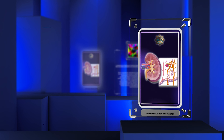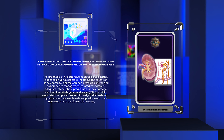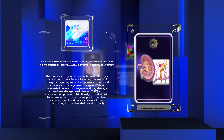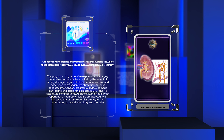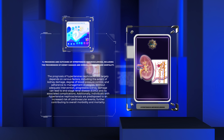The prognosis of hypertensive nephrosclerosis largely depends on various factors, including the extent of kidney damage, degree of blood pressure control, and adherence to management strategies. Without adequate intervention, progressive kidney damage can lead to end-stage renal disease (ESRD) and its associated complications. Additionally, individuals with hypertensive nephrosclerosis are predisposed to an increased risk of cardiovascular events, further contributing to overall morbidity and mortality.